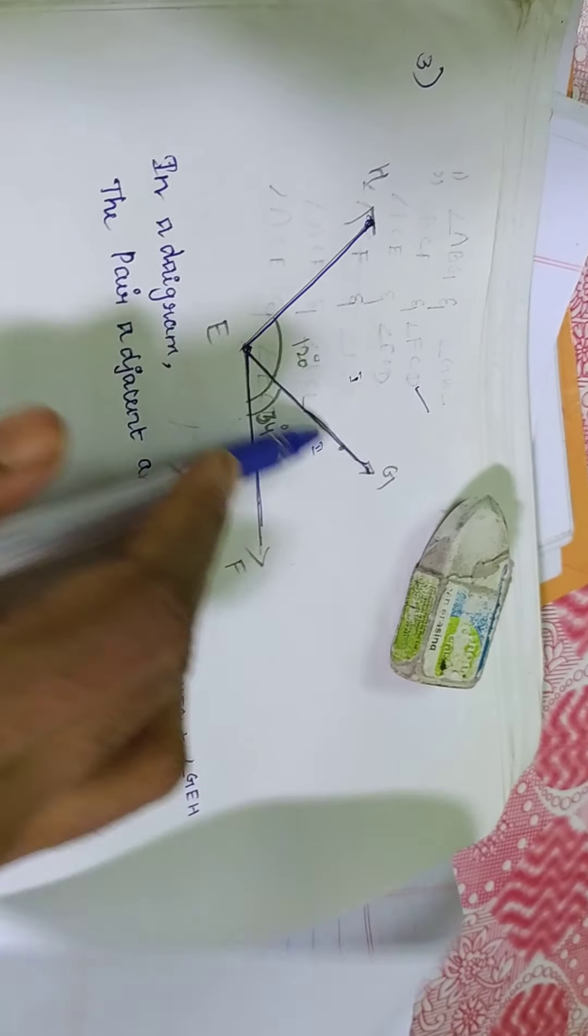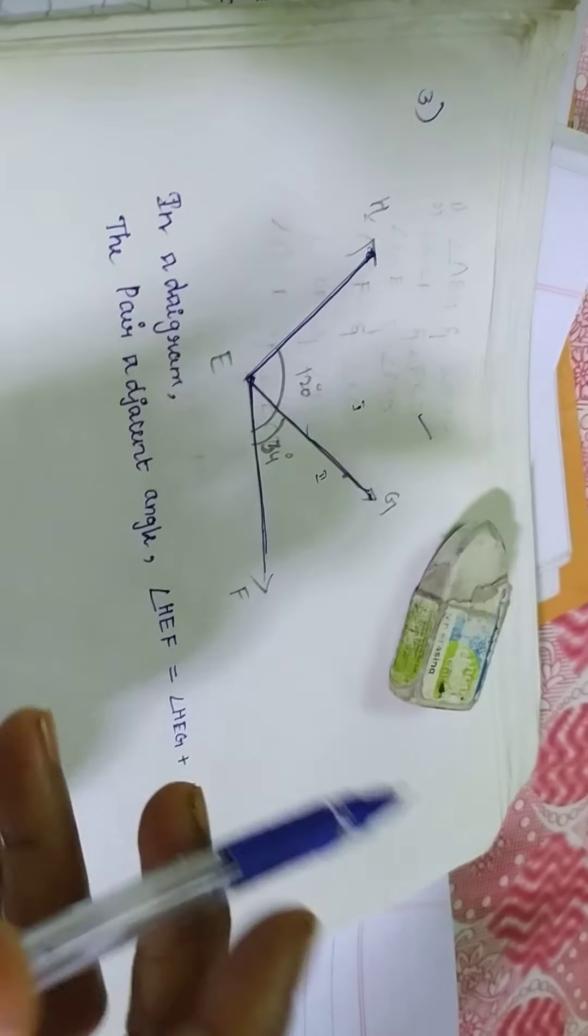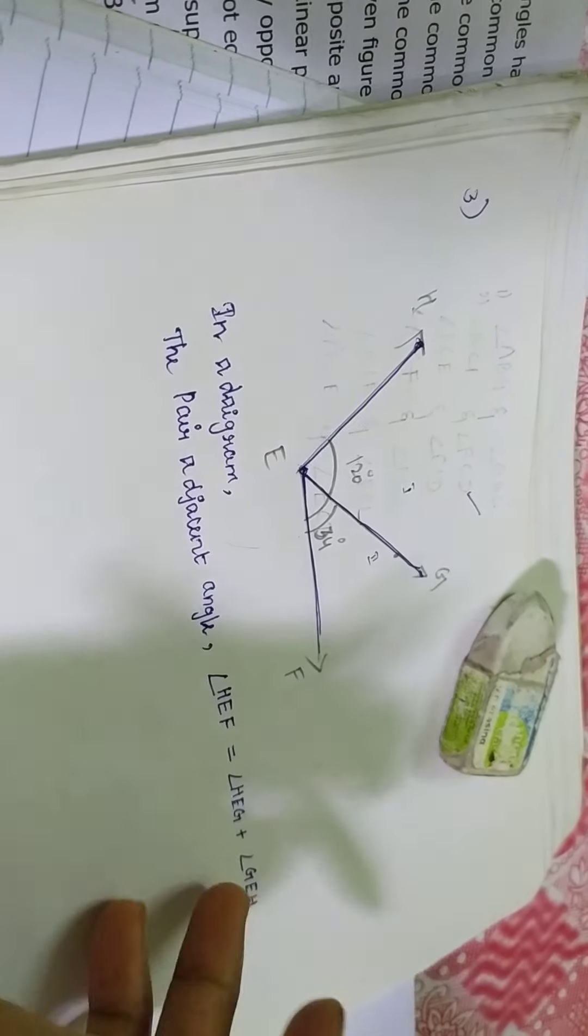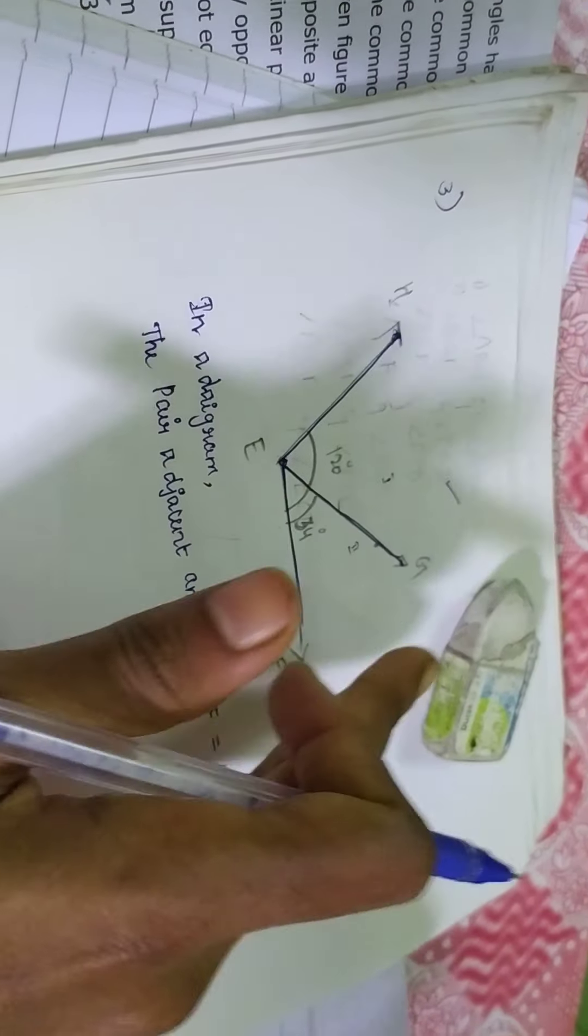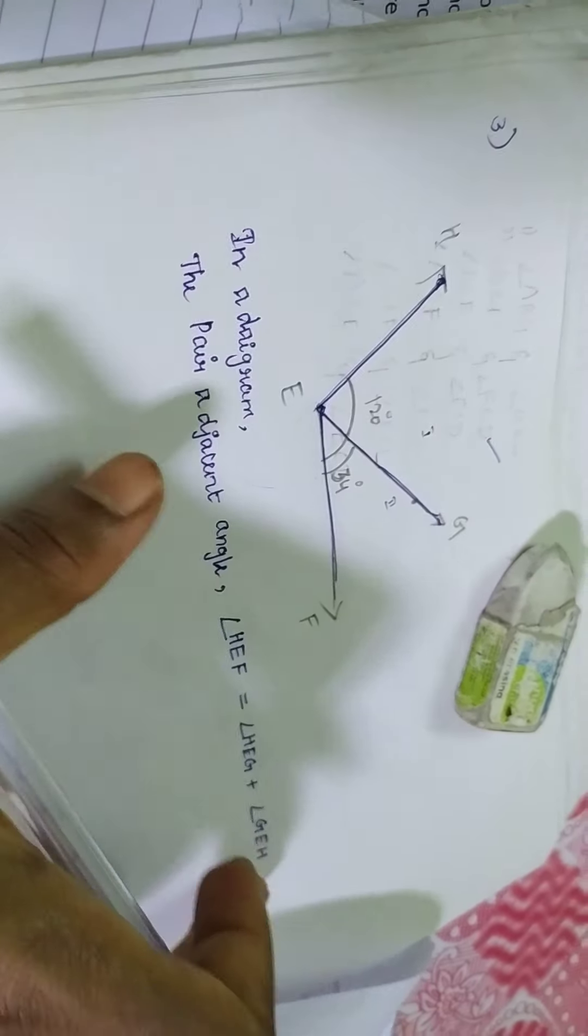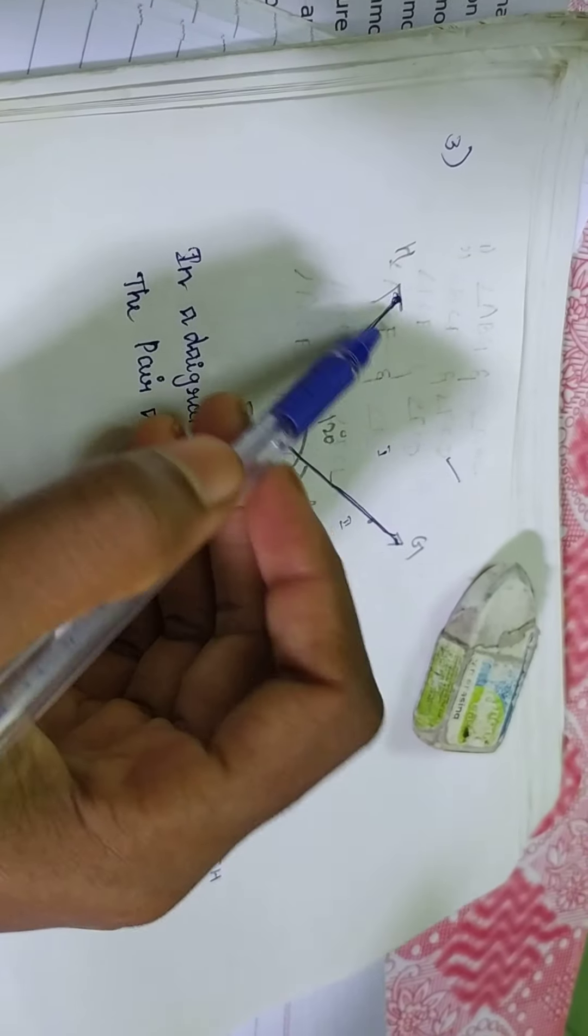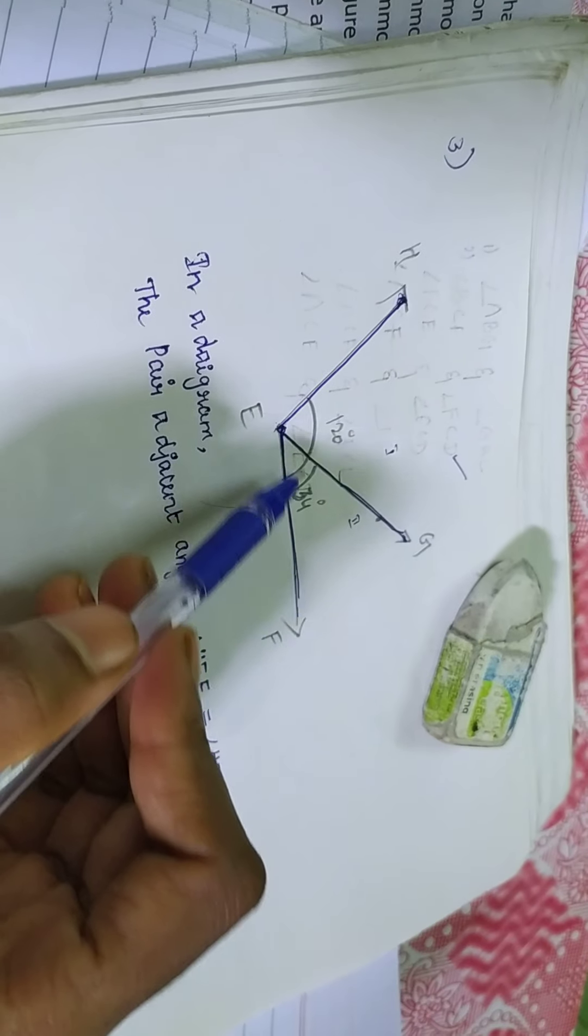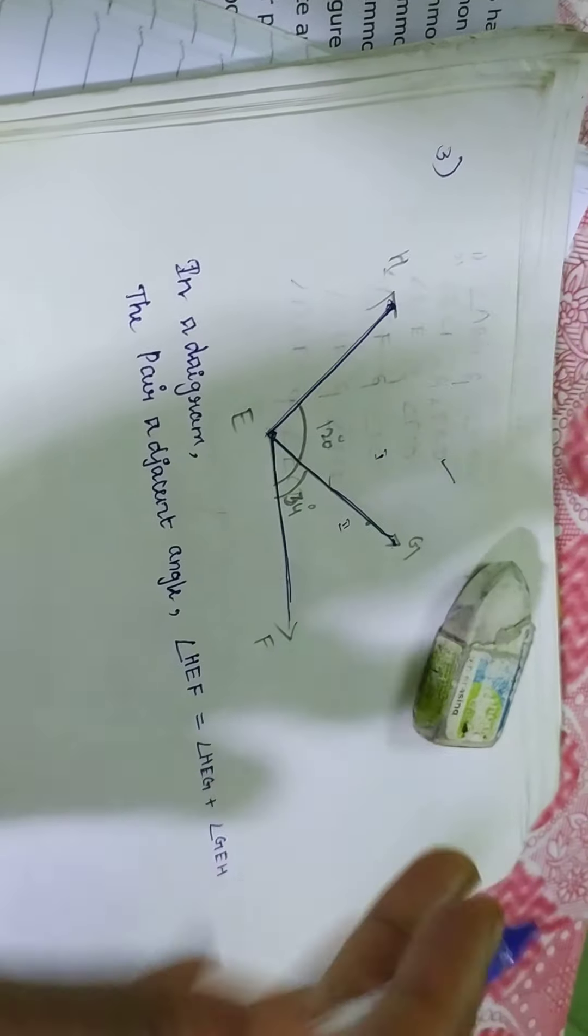So what they are given? Pair of this. This is one. Then, this is what adjacent angles are having by using this diagram. Then what they are given in a diagram. This is adjacent angle, right? In a diagram, what we are having? H E G.